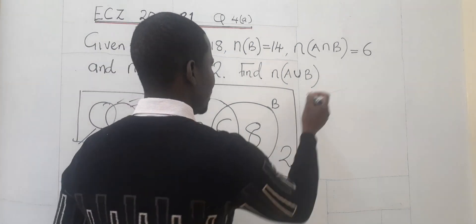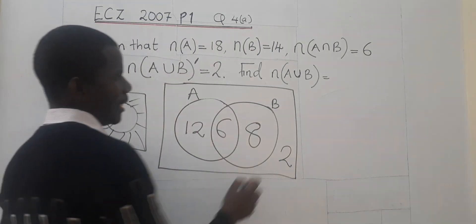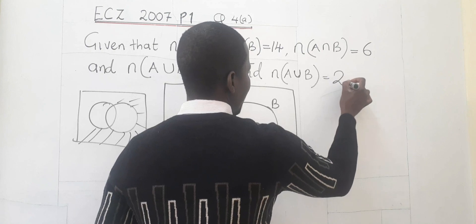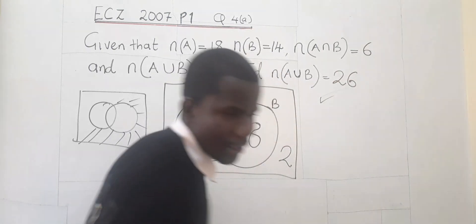Which is what? We add these elements. Plus, plus, plus. What do we get? We are going to get 26. Answered correctly.